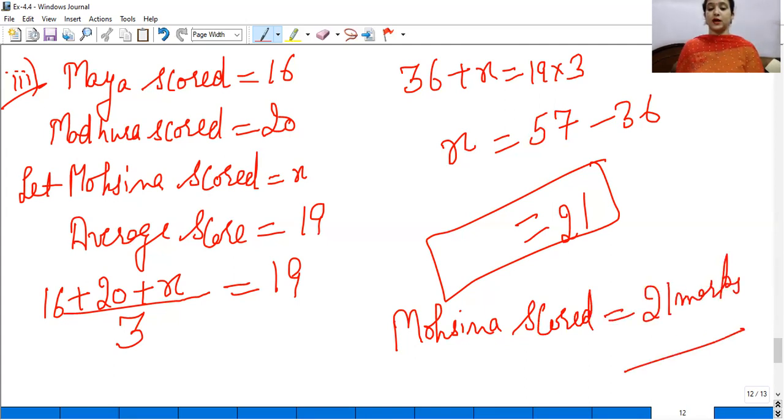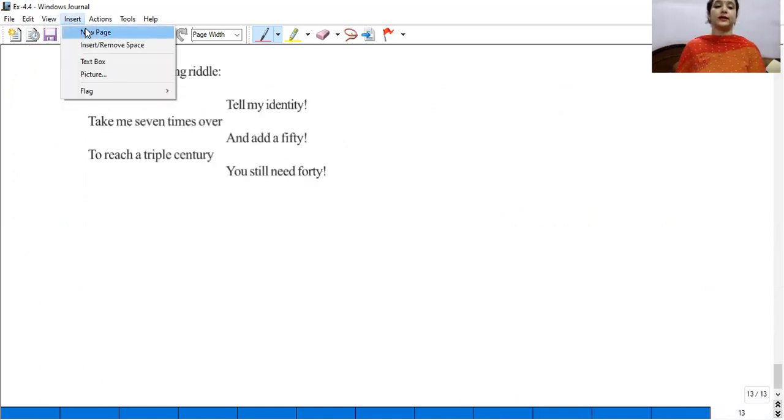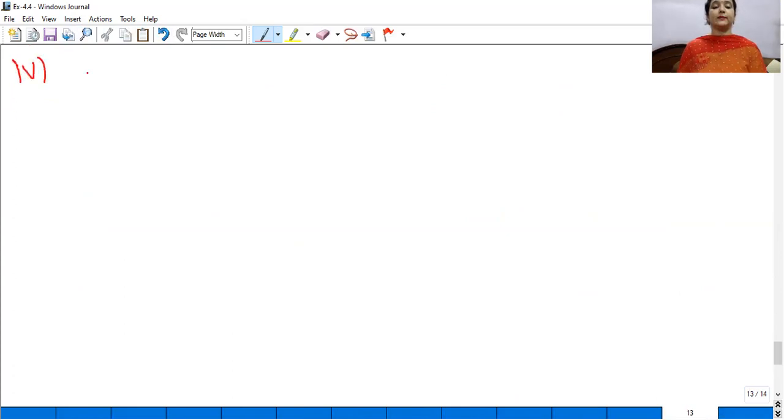Next one. People of Sundargram planted a total of 102 trees in the village garden. Some of the trees were fruit trees. The number of non-fruit trees were 2 more than 3 times the number of fruit trees. So first we assume, let number of fruit trees be equal to x.